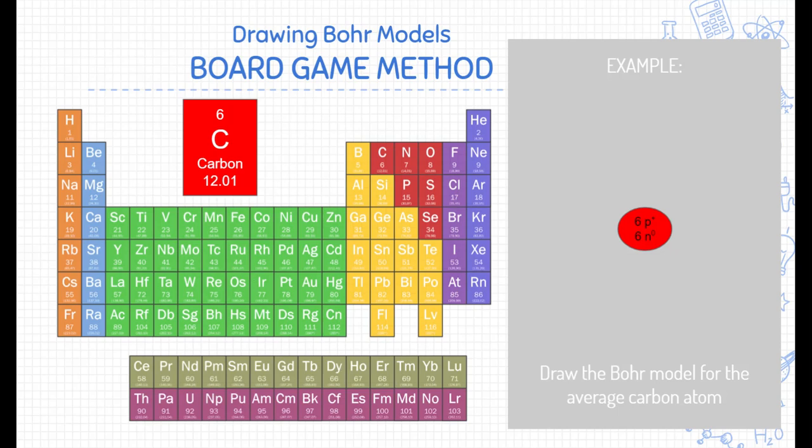Well, how many rings does a carbon Bohr model have? Carbon is found on the second row of the periodic table. So we are going to put two electron energy levels here: a low energy ground state energy level, and an excited state energy level.